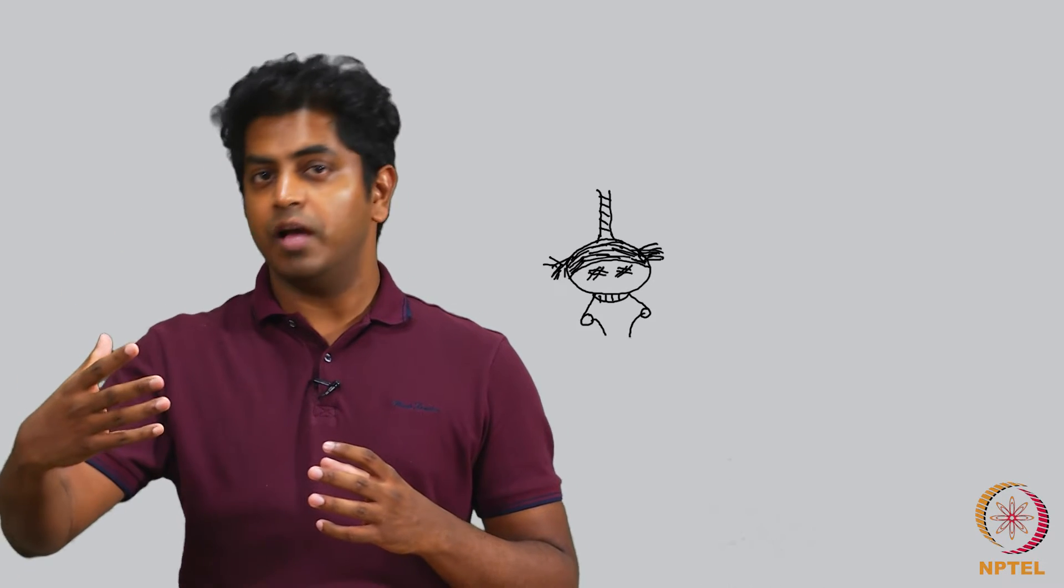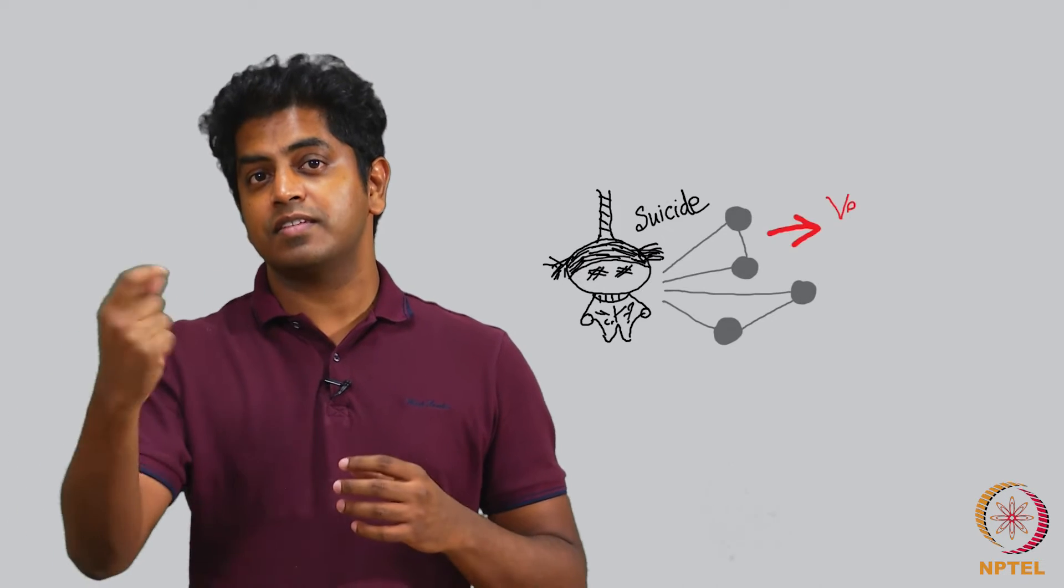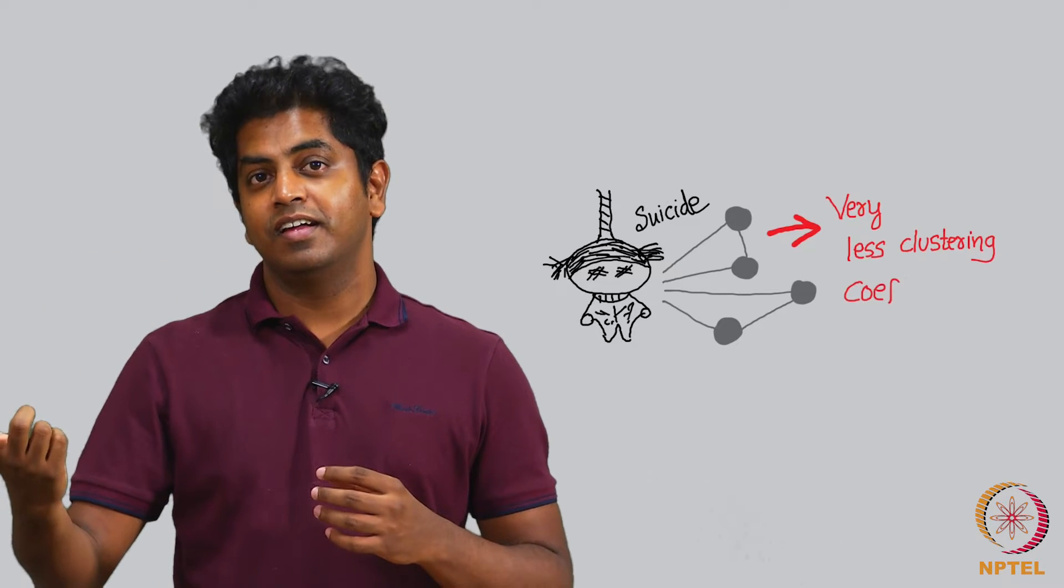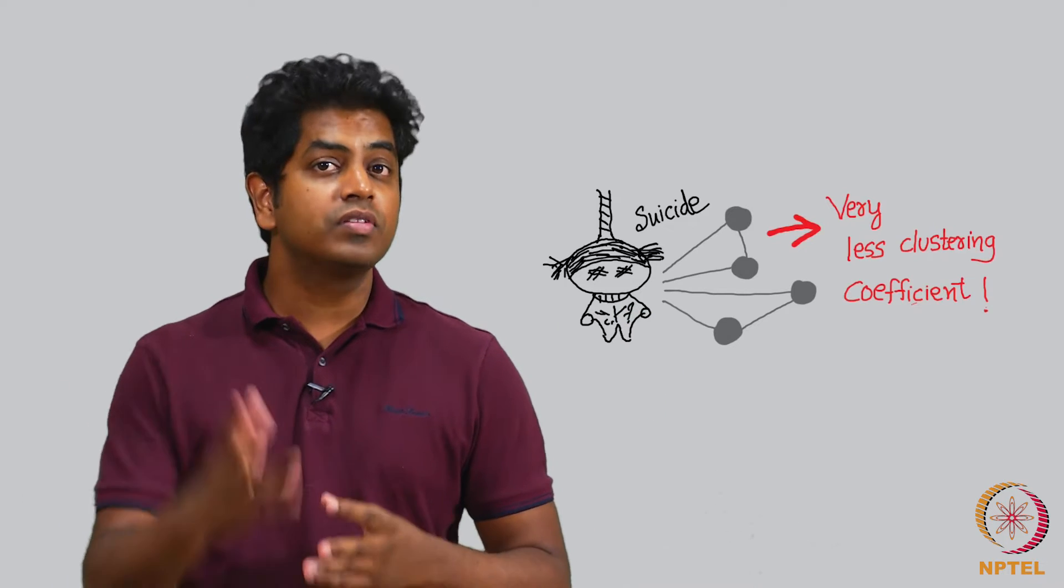What is the use of this? A very eye-opening research says in most of the cases where suicide was committed, they observed that these people had very less clustering coefficient. I mean, is it surprising? I do not think it is very surprising.